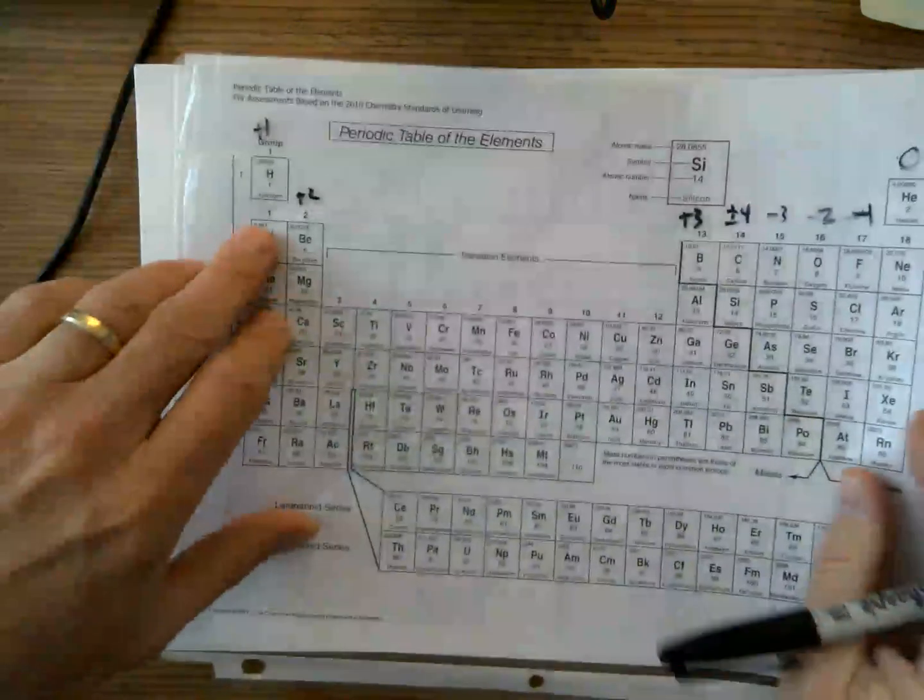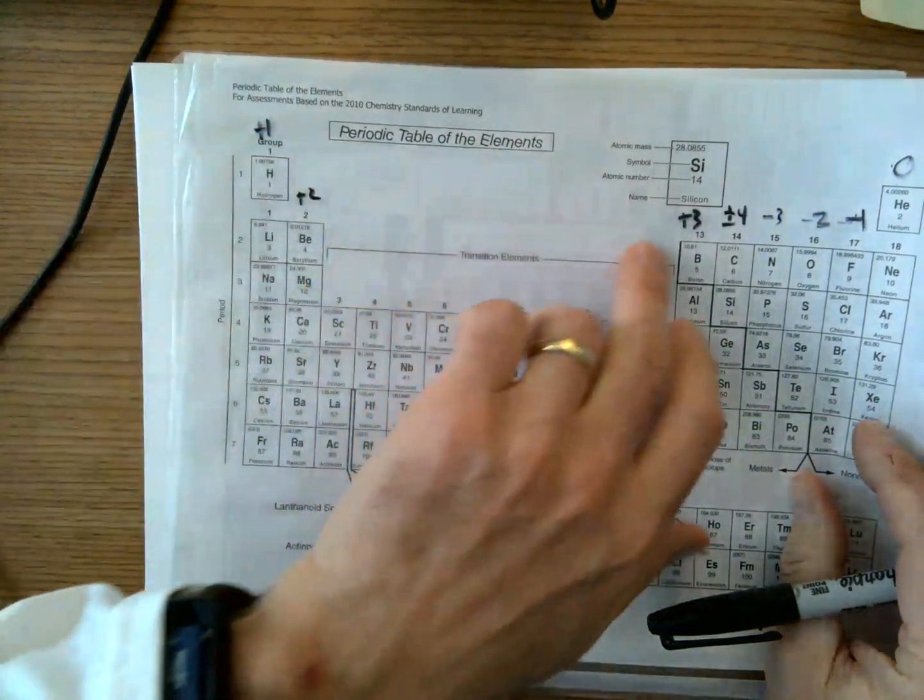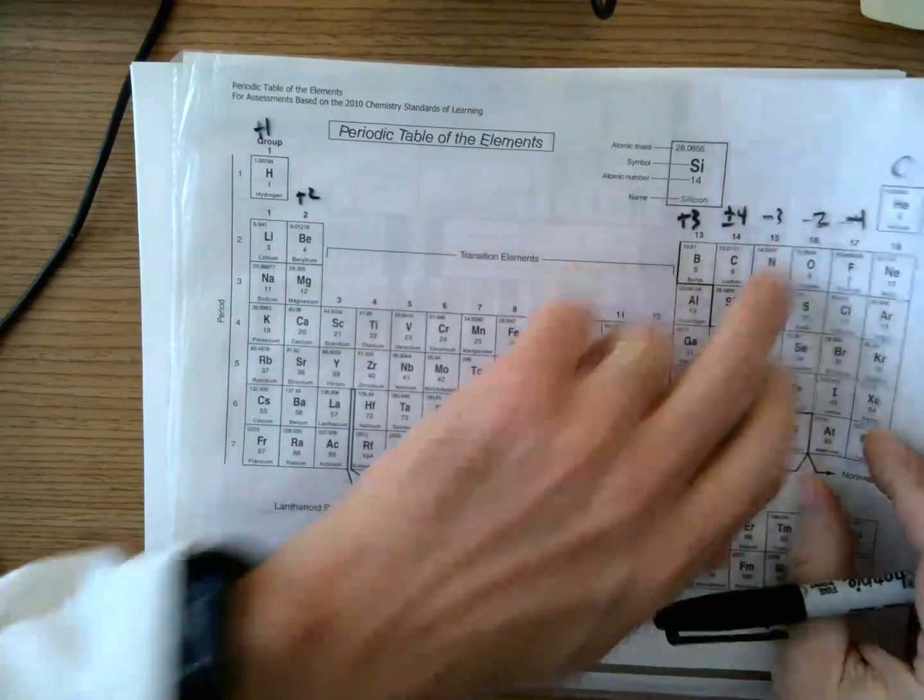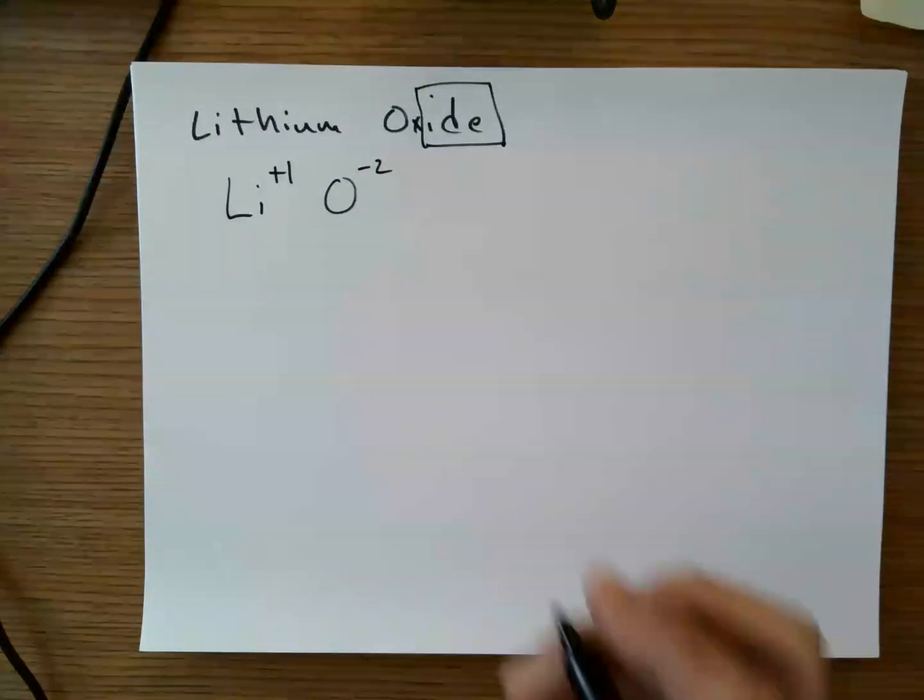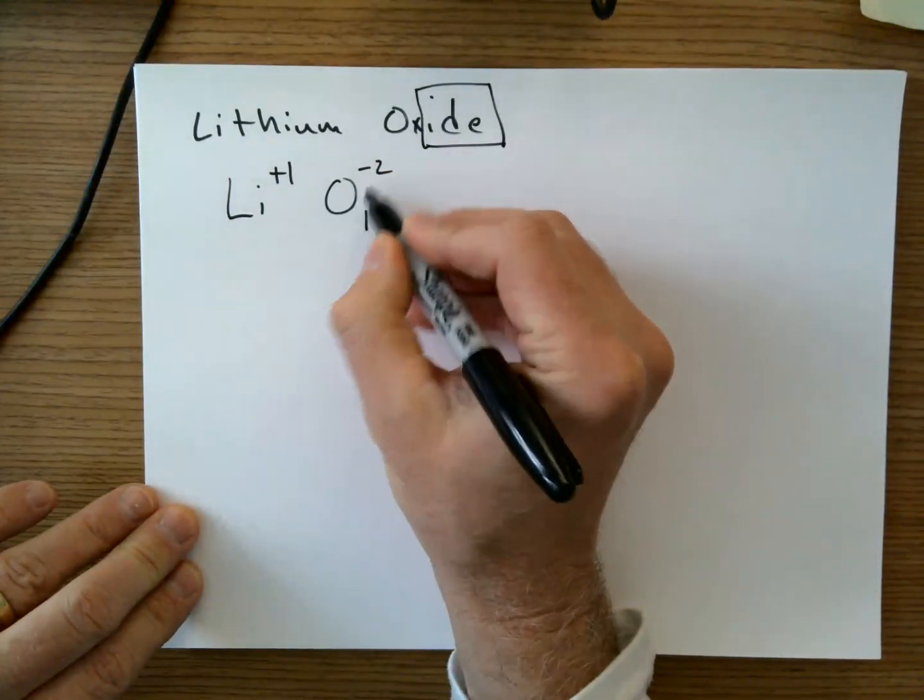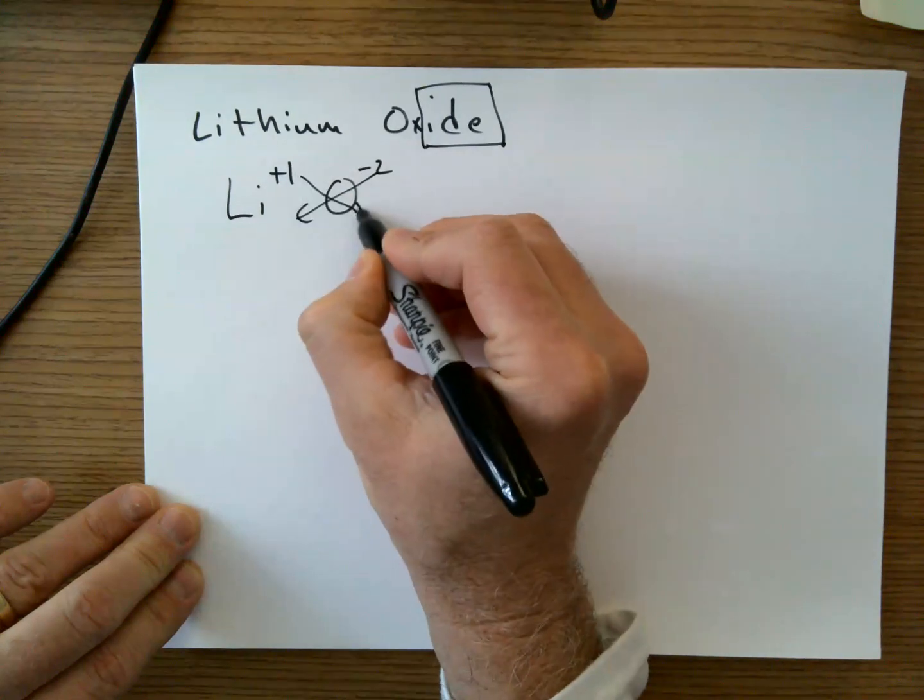So what I want to do is I want to write the symbol with the oxidation state. And you can write plus one or one plus. It's technically one plus and two minus. And we're going to take this and we're going to crisscross our numbers.